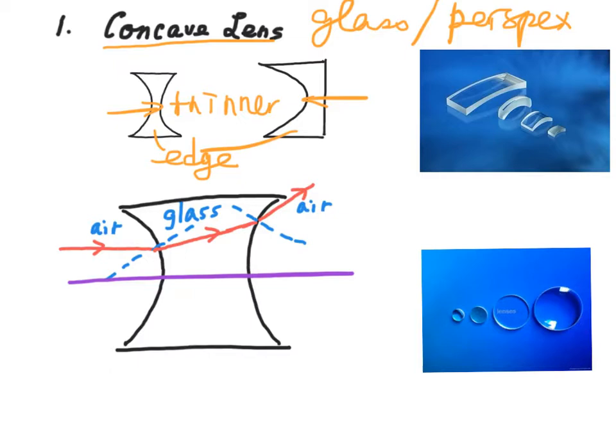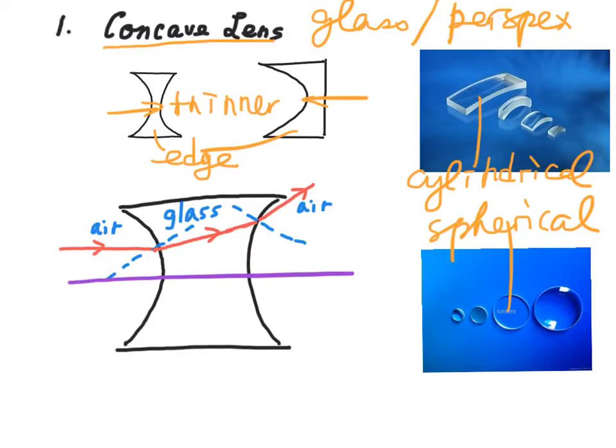There are two types of concave lens. The first one is cylindrical concave lens, and the other type is spherical concave lens. The line that bisects the concave lens into two equal halves is called the principal axis.